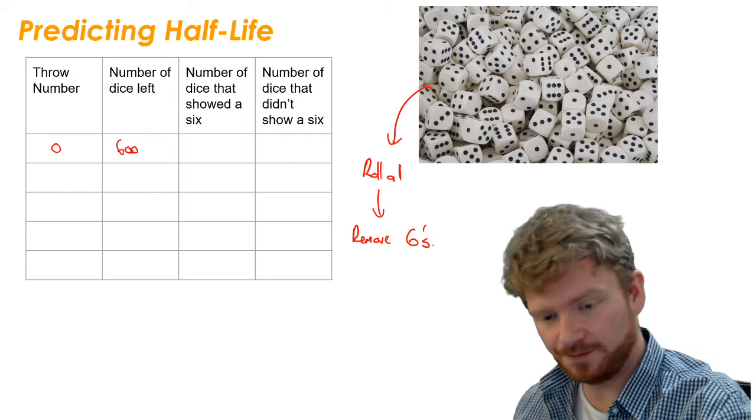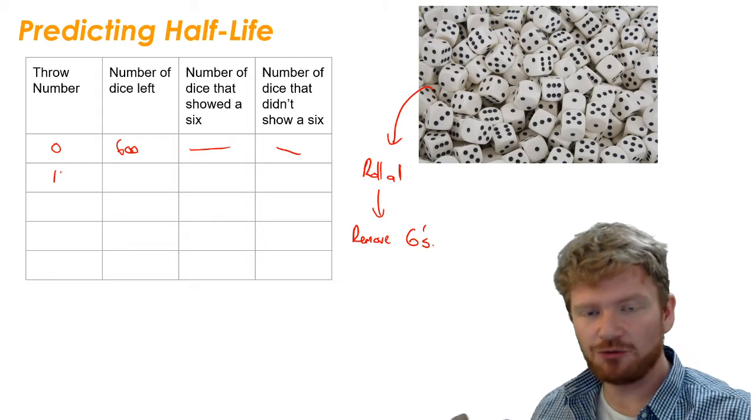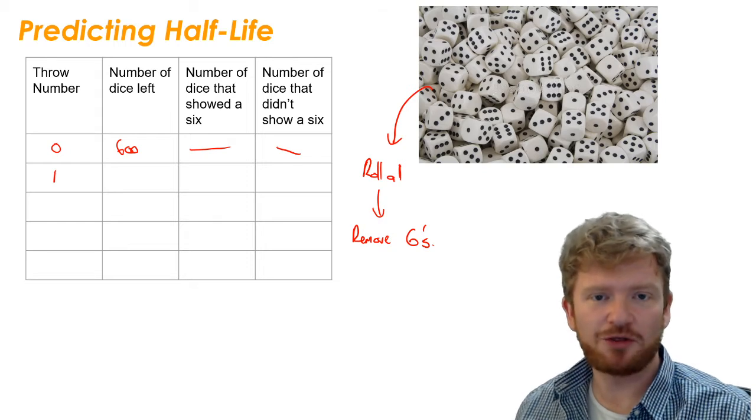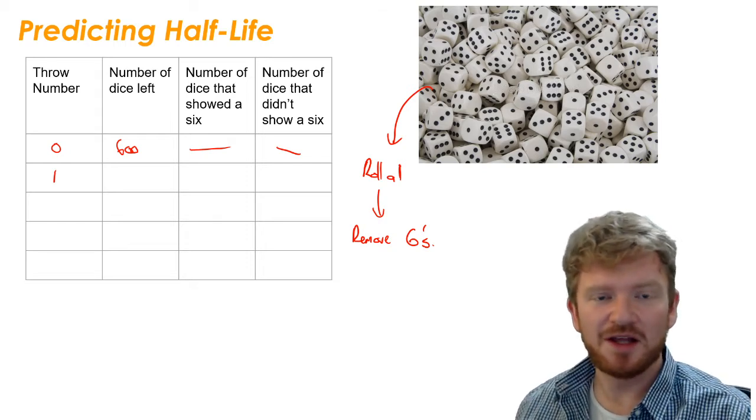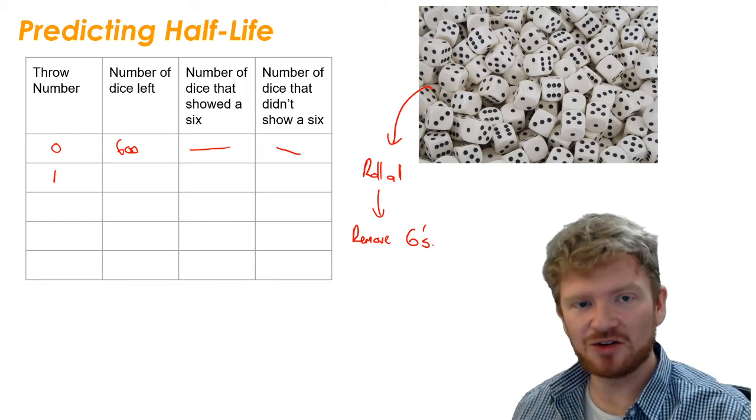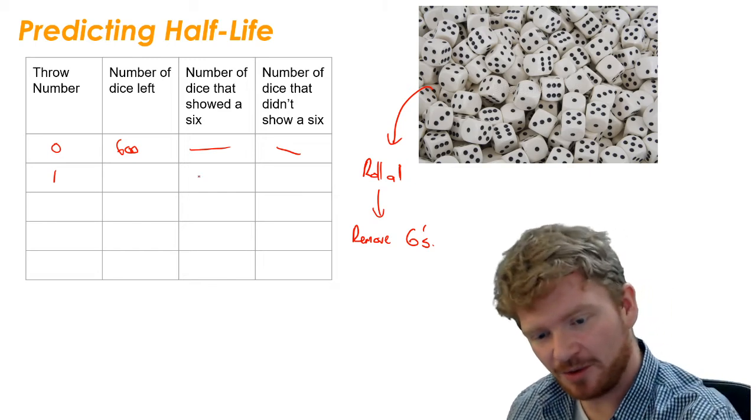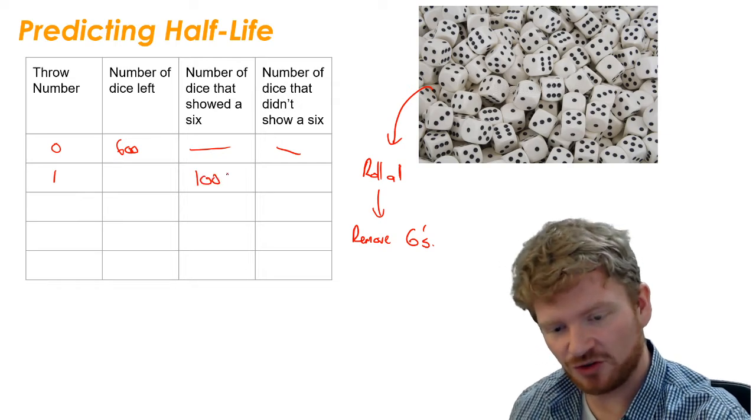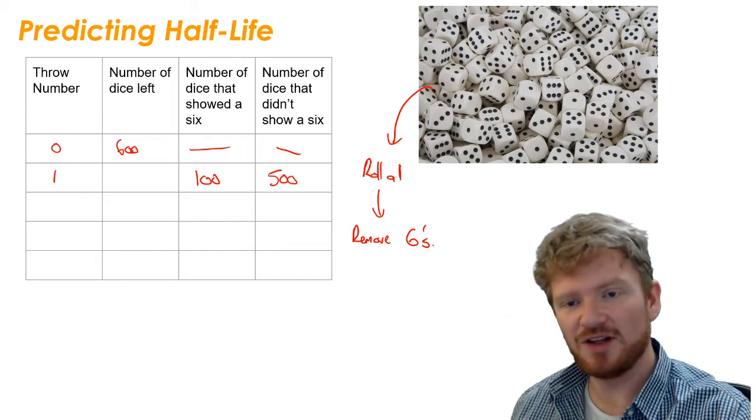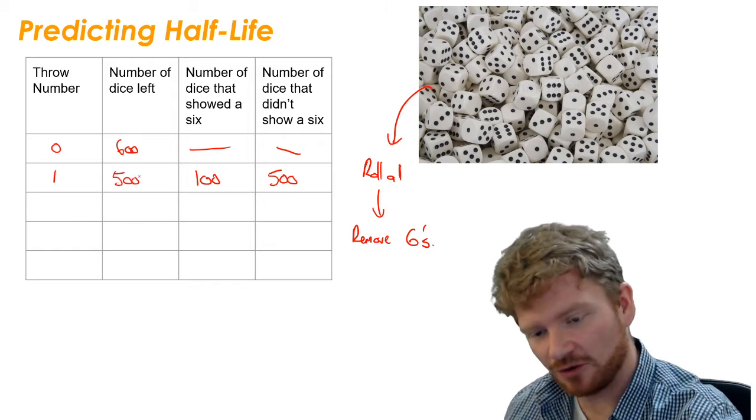On our first throw, on throw number one, we're going to throw 600 dice. So how many would we expect to throw a six? Well, if I throw a six-sided dice, you've got a one in six chance of each number coming up. So I would expect one-sixth of my dice to decay. In this case, I would expect 100 dice to show a six, and 500 dice to not show a six. Now if I then remove my 100 dice, I've now only got 500 left.